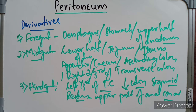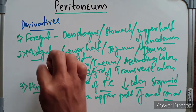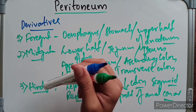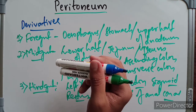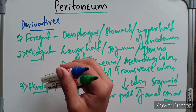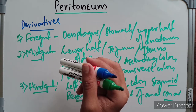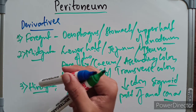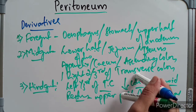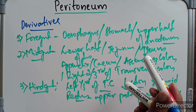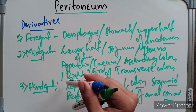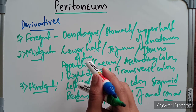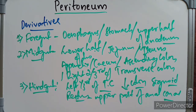The midgut and hindgut possess only the dorsal mesentery. The fate of this dorsal mesentery is: it forms the mesentery of the jejunum and ileum; the mesentery of the appendix, known as the mesoappendix; the mesentery of the transverse colon, known as the transverse mesocolon; and the mesentery of the sigmoid colon, known as the sigmoid mesocolon.